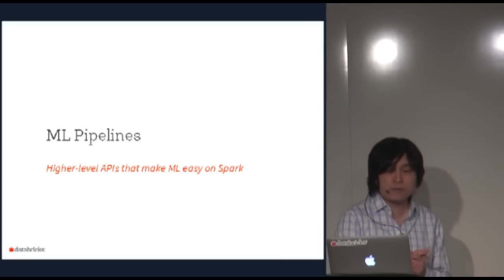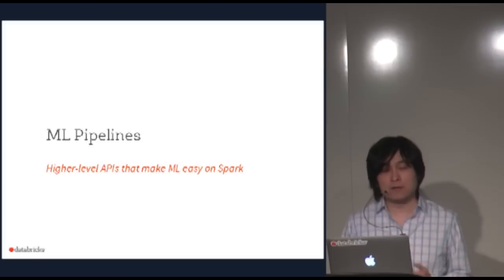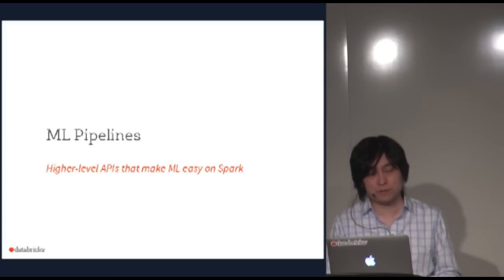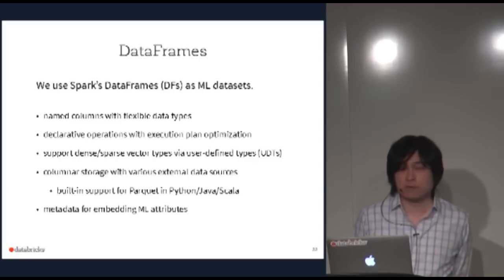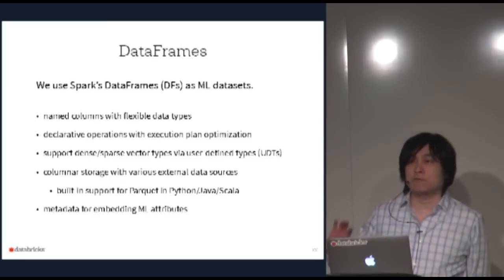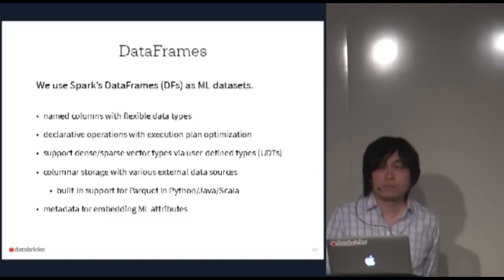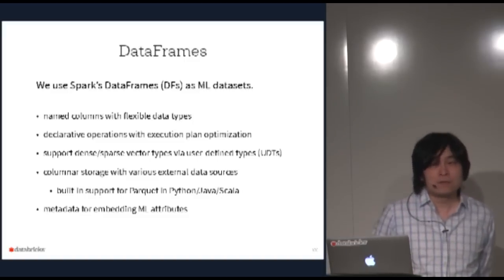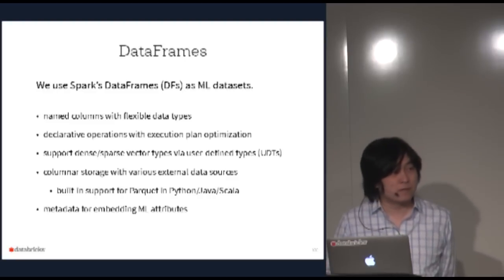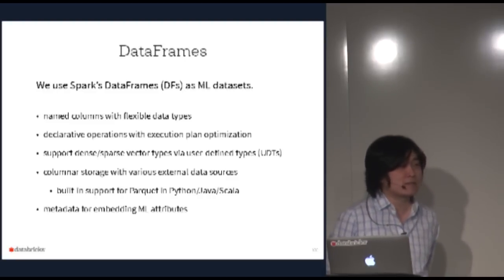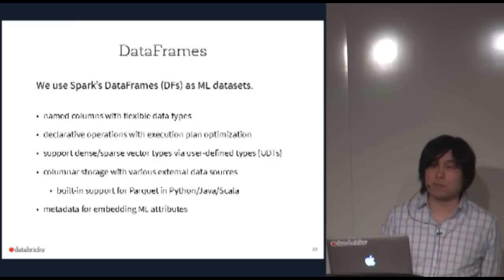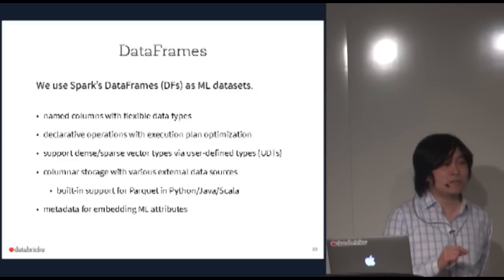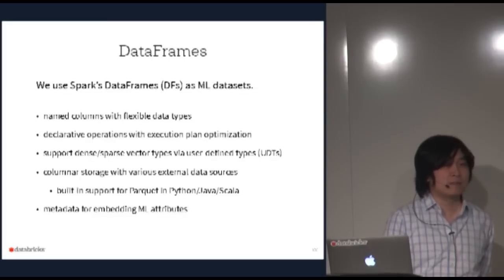Our solution is the ML Pipelines API, which tries to make pipeline creation and tuning easy. It's built on top of the DataFrames API, released in 1.3. DataFrames is essentially the same API as R DataFrames or Pandas, but for big data, backed by the Spark SQL engine with an execution plan optimizer that reduces data size and number of stages when you call aggregates or filters.